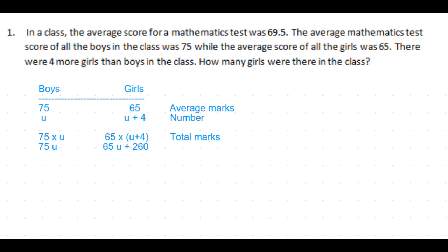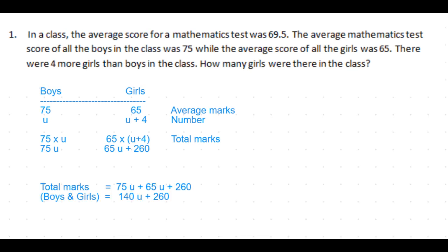Let's now look at the total marks. Total marks in the class is the sum of all the marks by the boys and the girls, which is 75u plus 65u plus 260, which is 140u plus 260.